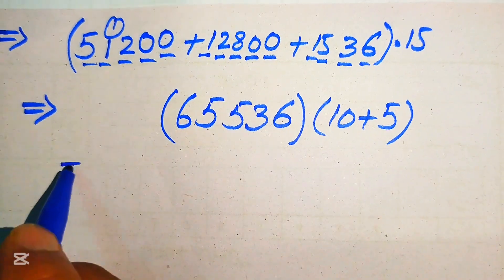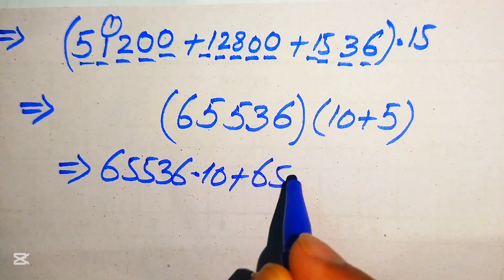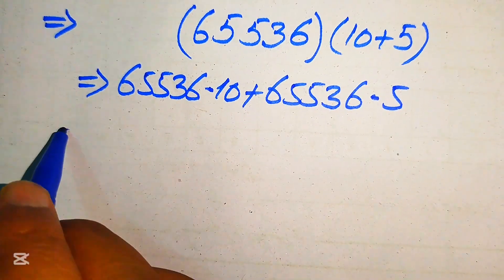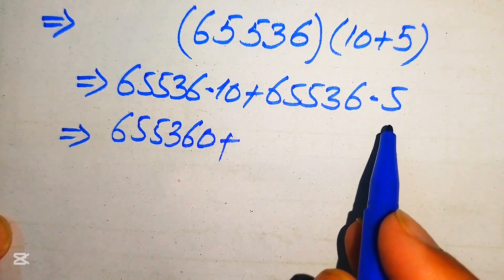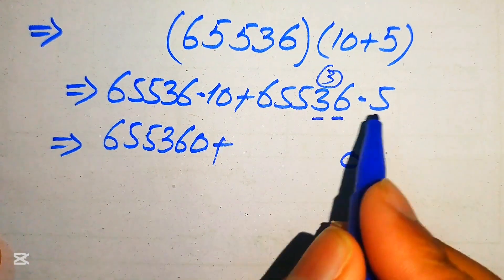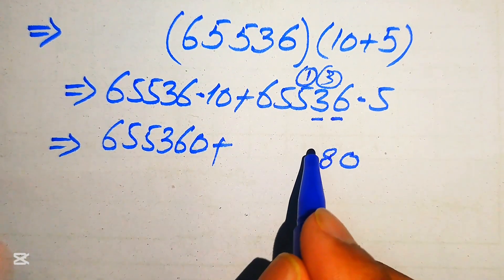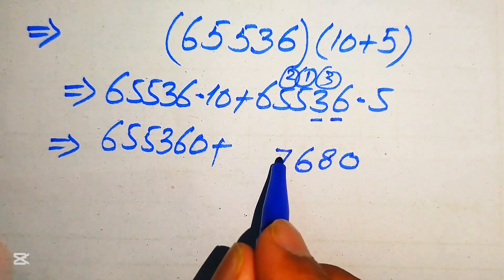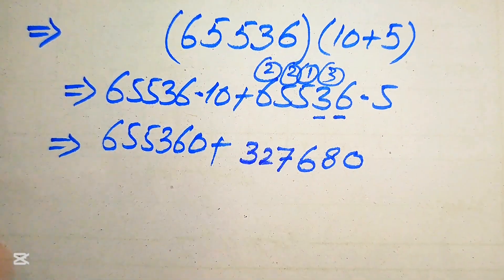Multiplying 65536 by 10 gives 655360. Then multiplying 65536 by 5: 5×6=30, write 0 carry 3; 5×3=15 plus 3=18, write 8 carry 1; 5×5=25 plus 1=26, write 6 carry 2; 5×5=25 plus 2=27, write 7 carry 2; 5×6=30 plus 2=32. So 65536 × 5 = 327680.